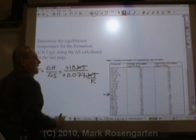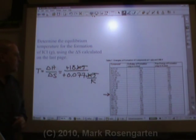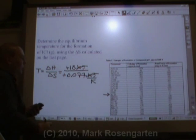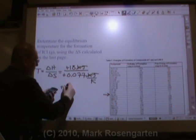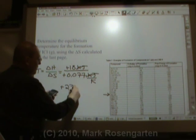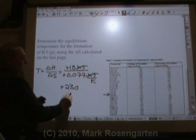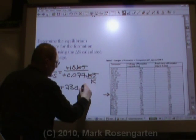That kilojoules cancel out. When we divide these two numbers, we get a temperature of positive 230, two sig figs, Kelvin.